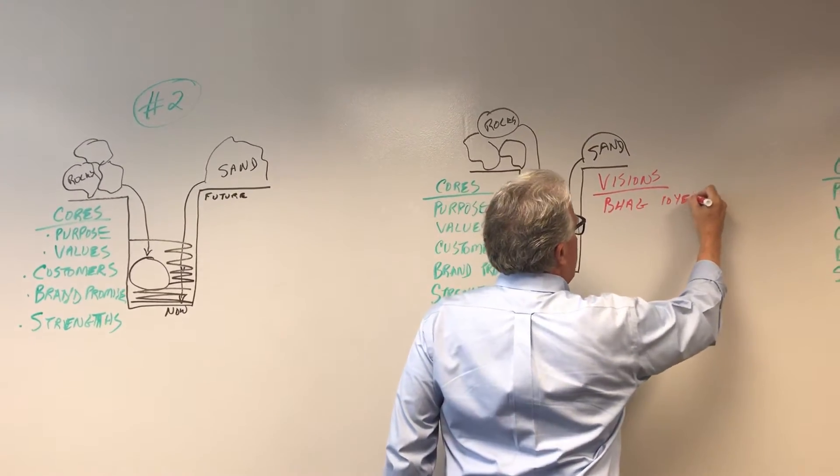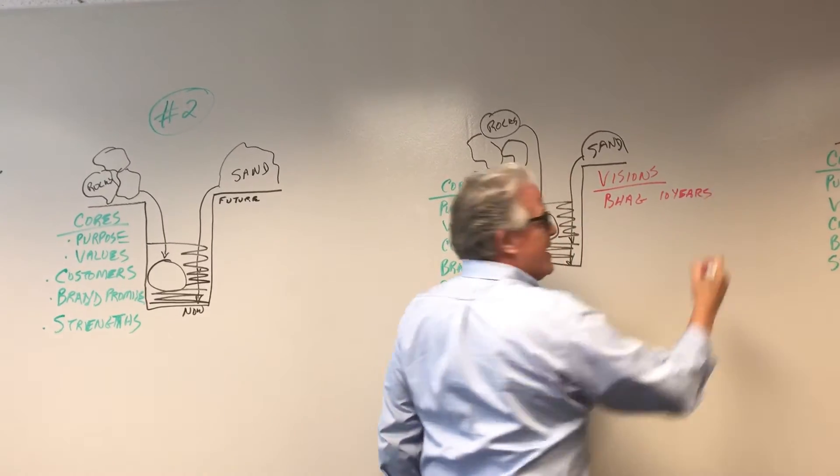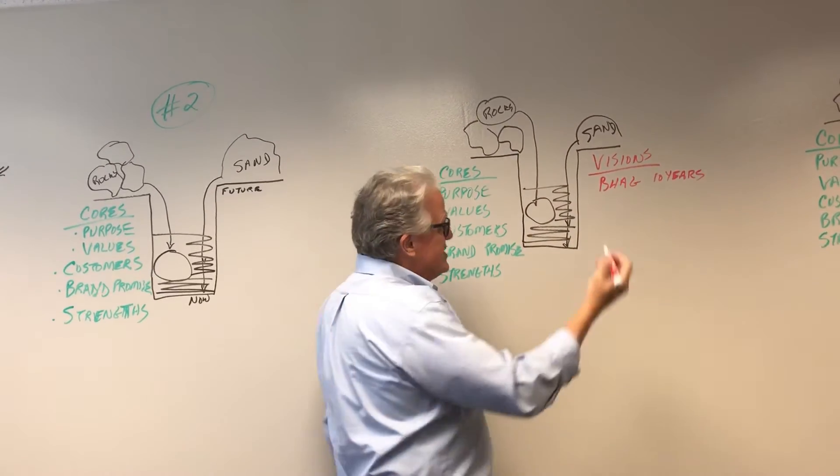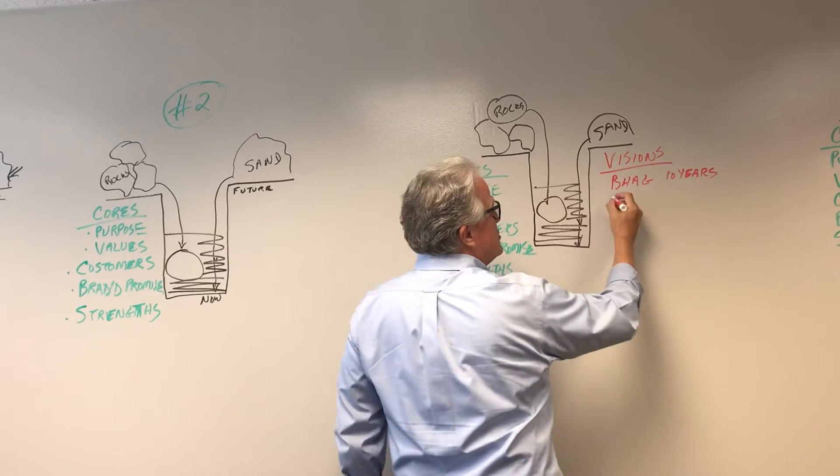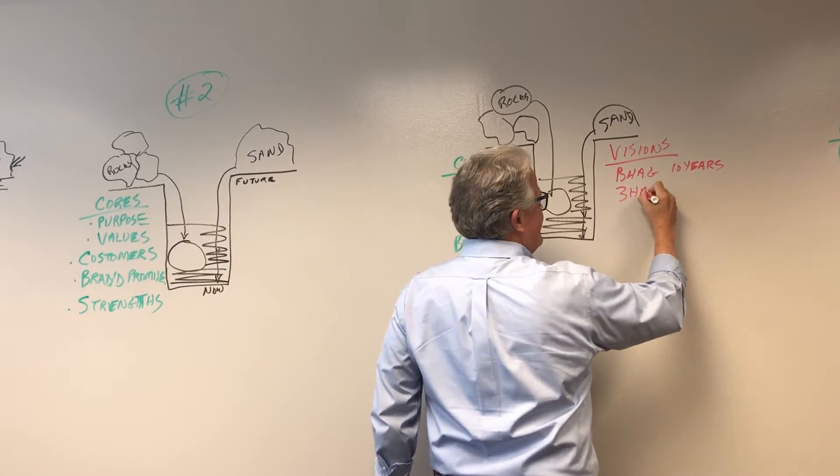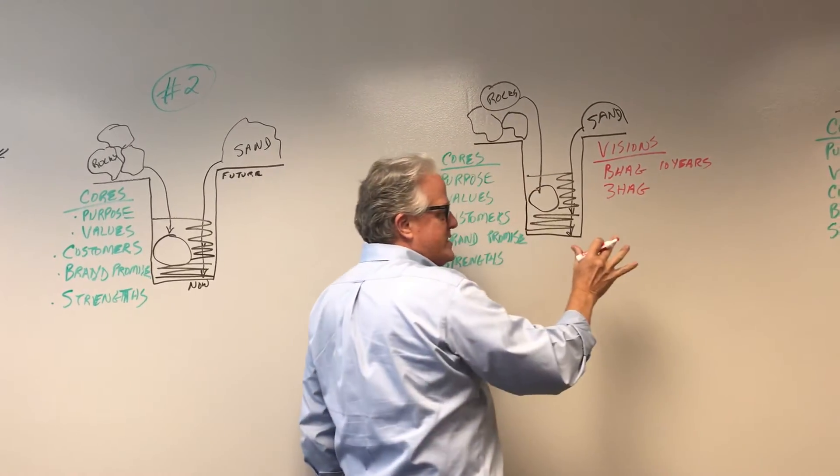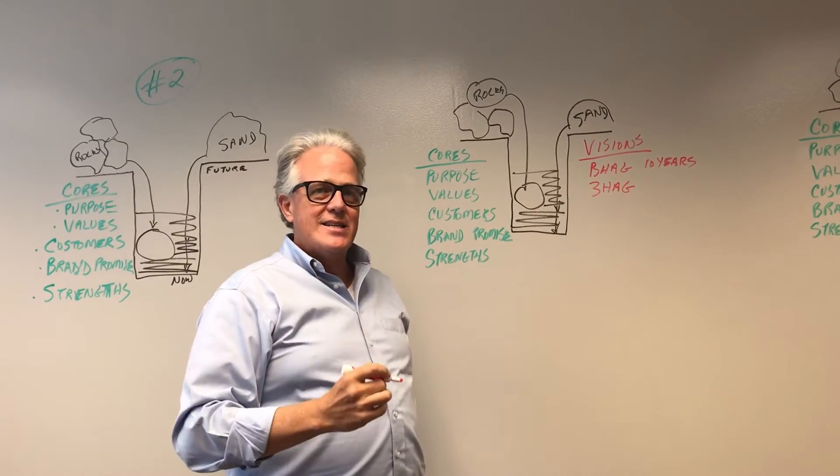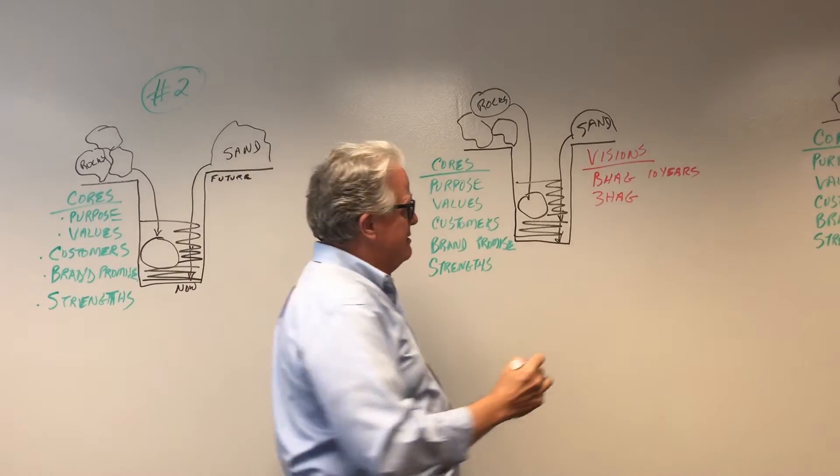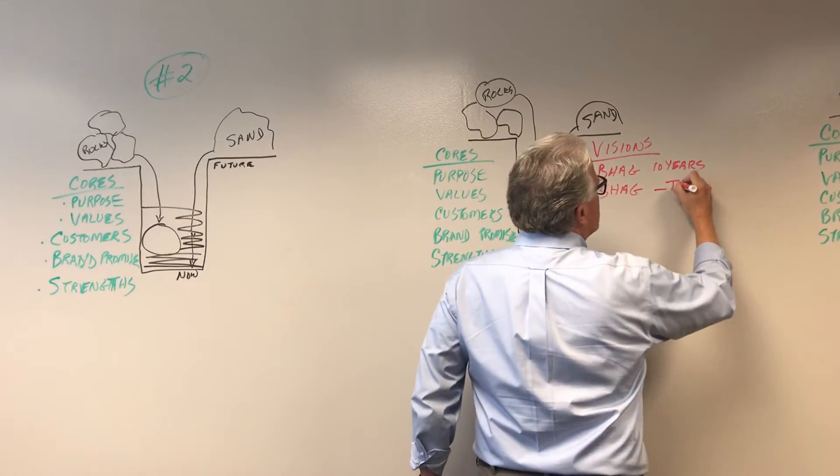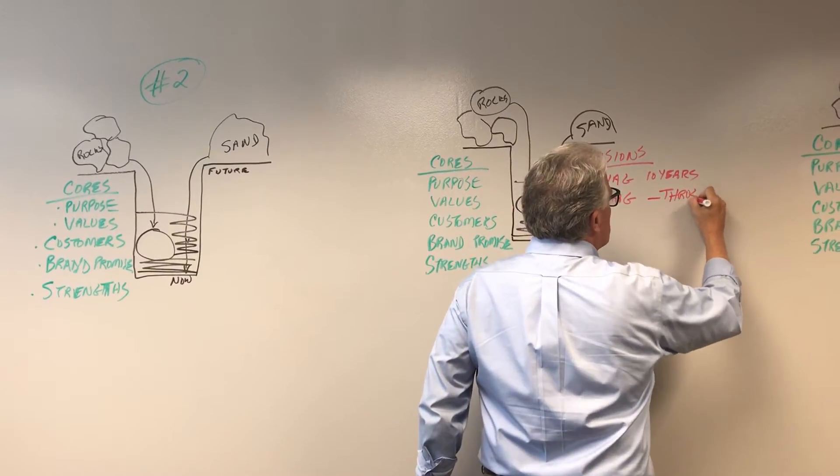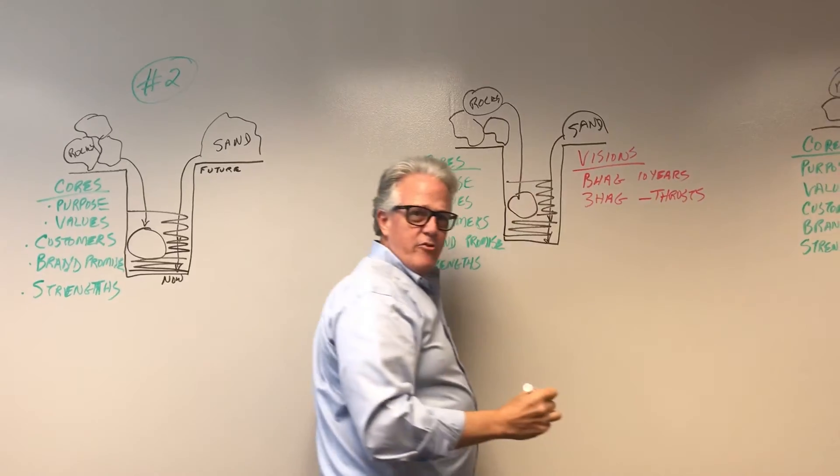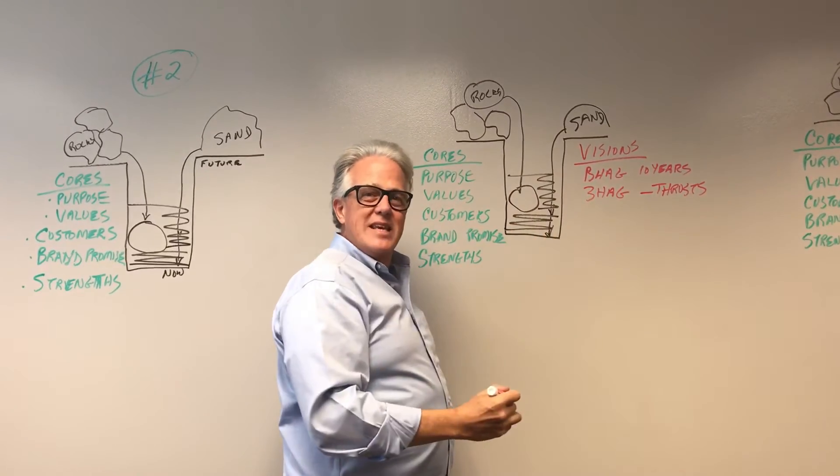Which is a BHAG. Big, hairy, audacious goal. Second, come back from the future to a 3HAG. Somewhat same initials but that's three years out. Three years highly achievable goal. And with that, what are the main things you're going to have to work on that are going to be different that allow you to get there?